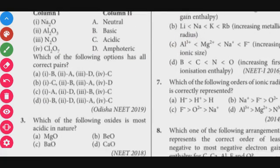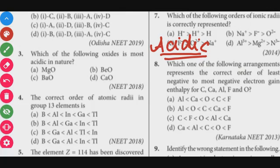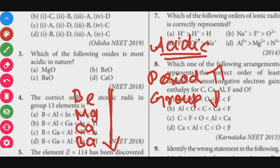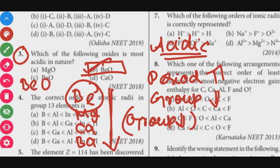Next, question number 3: Which of the following is most acidic in nature? Looking at the trend for acidic behaviour — acidic behaviour increases period-wise and decreases group-wise. Beryllium oxide is the most acidic among the options. Option B, Beryllium Oxide, is the correct answer.